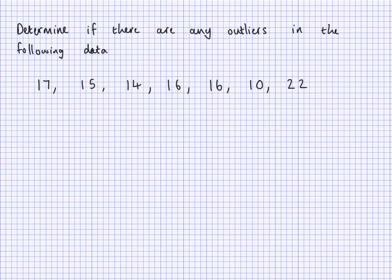In this video, I'm going to give you some calculations that you can use to determine if there are any outliers in a data set. There are going to be two different calculations we're going to use for that. The first one is going to use the interquartile range.